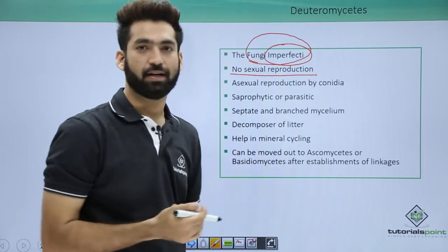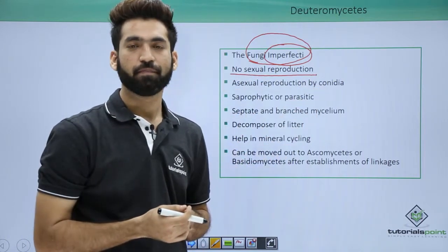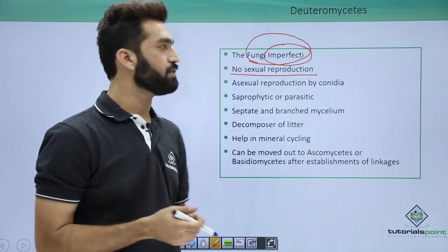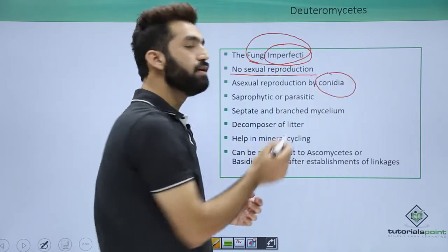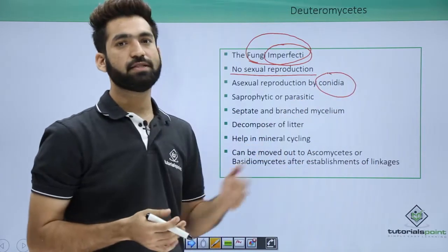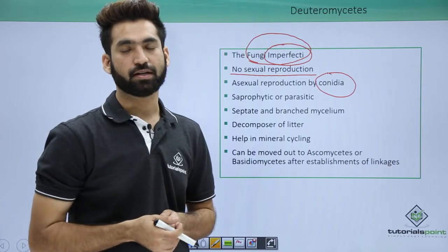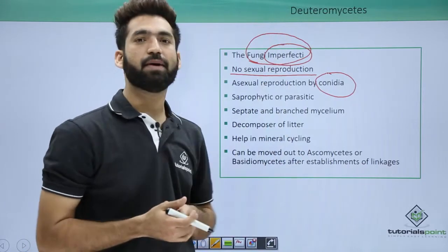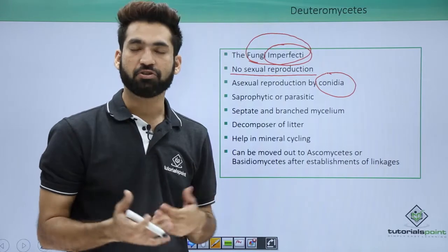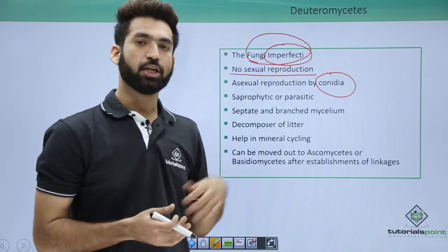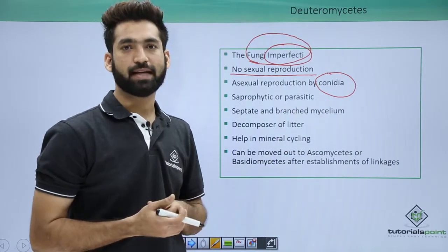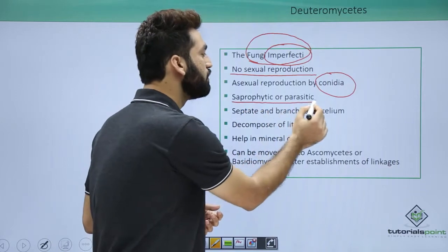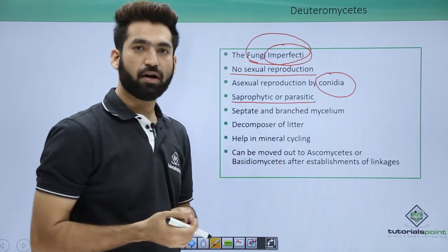There is no sexual reproduction in Deuteromycetes. When they don't reproduce with the help of sexual reproduction, conidia are formed, and because of the presence of conidia they show asexual reproduction. So remember: in Deuteromycetes there is no sexual reproduction, and conidia are used for asexual reproduction.